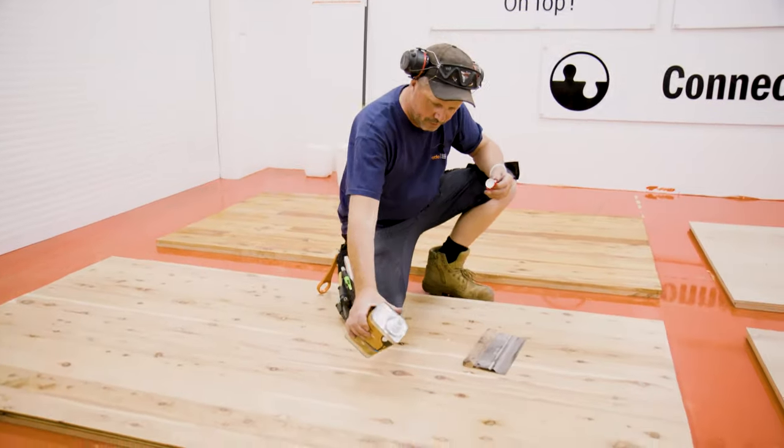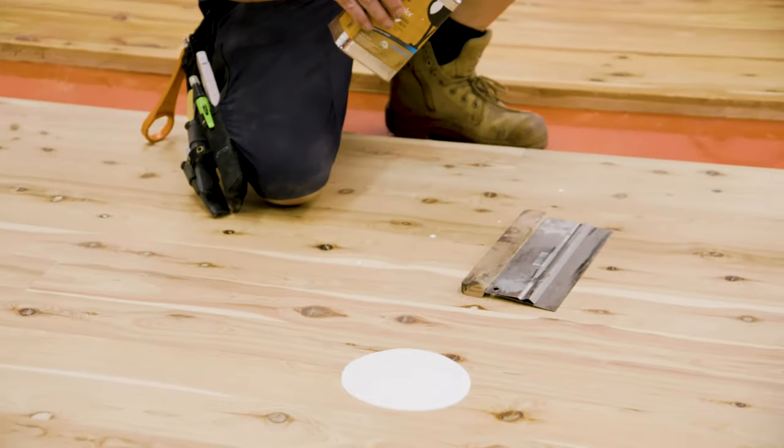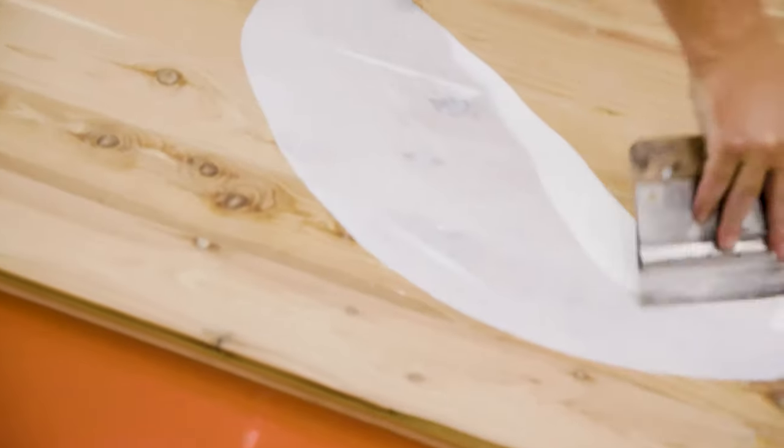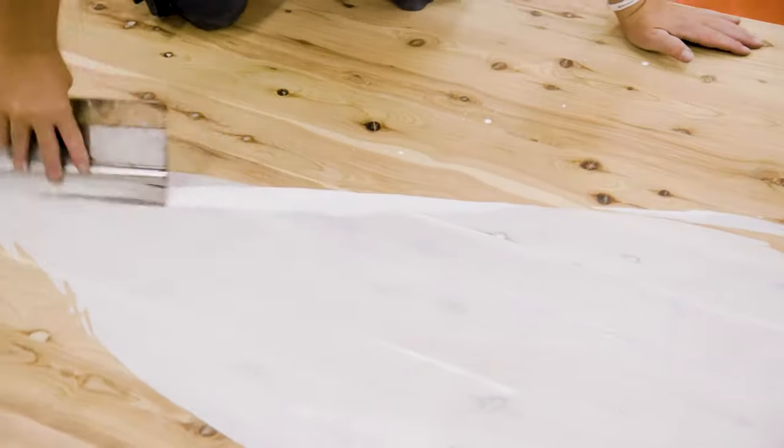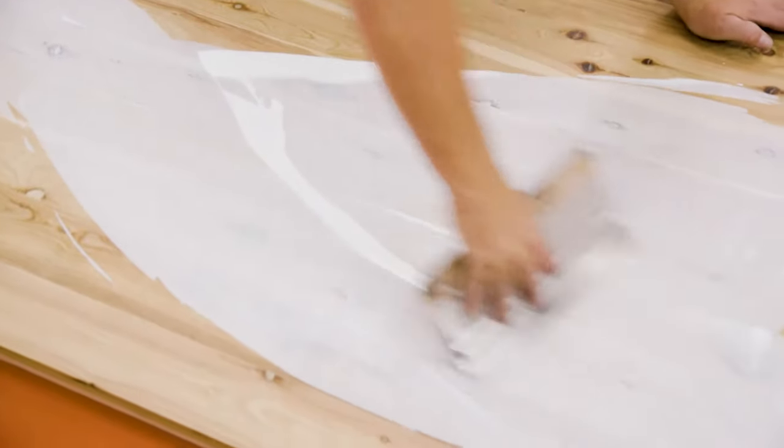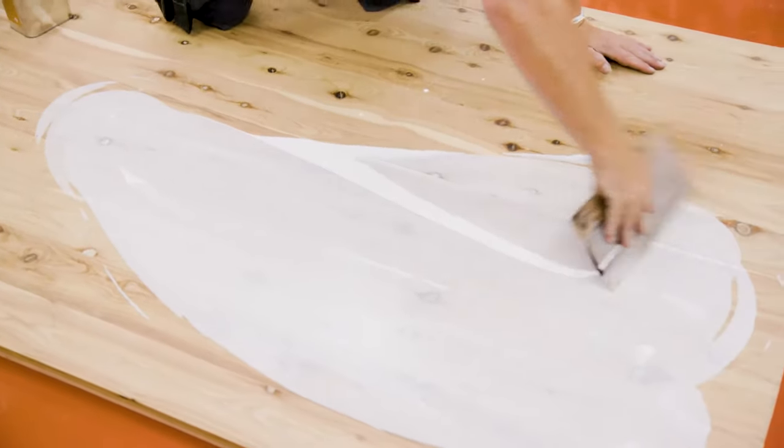The first step in this process is to pour the stain onto the floor. There are various methods to apply the stain, but for this demonstration we will be using a stainless steel trowel. The trowel allows for an even distribution of the stain across the floor.